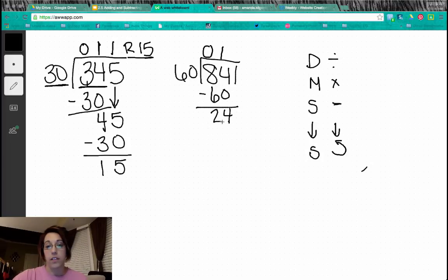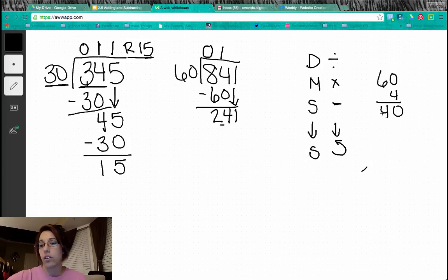8 minus 6 is 2. Bring down our 1. We have 241. So now I've got to start over and ask myself, how many times will 60 go into 241? Well, I know that 6 will go into 24 four times. So let's try 60 times 4. That's going to be 240.